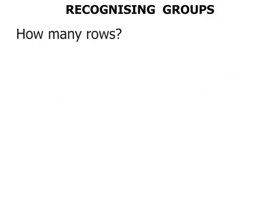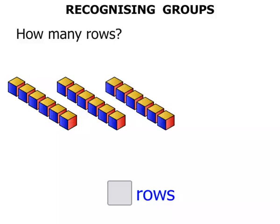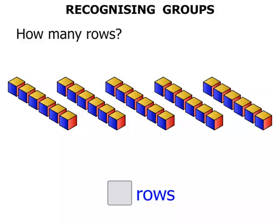How many rows? Let's write our answer down here. We've got one row of blocks. Two rows of blocks. Three rows of blocks. Four rows of blocks. Five rows of blocks. We've got five rows.